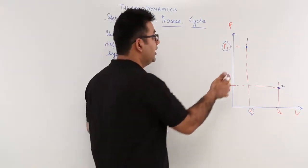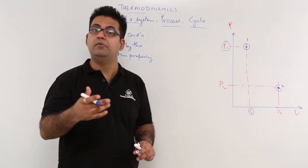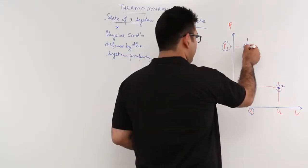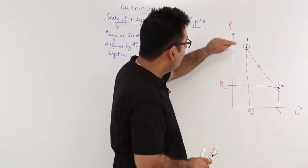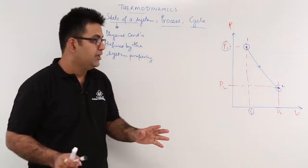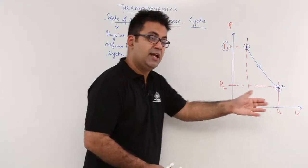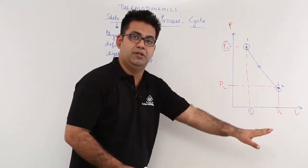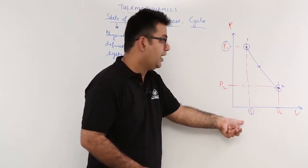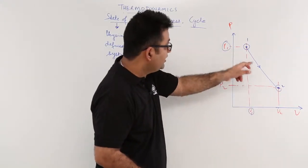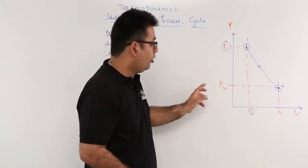How did your system reach from state 1 to state 2? In reaching from state 1 to state 2, a system would have followed a certain process. This is the process that the system followed in moving from state 1 to state 2. It can be any process. So when there is a state change, we say a process has occurred. In that state change, there may be a change in the state variables — the properties of the system. At state 1, the state variables are P1 and V1; at state 2, they are P2 and V2.